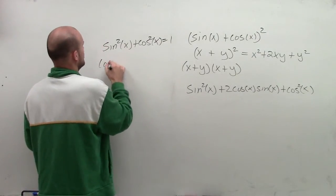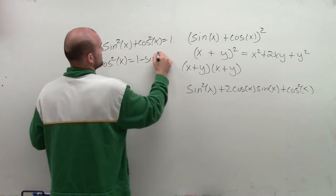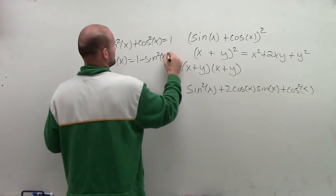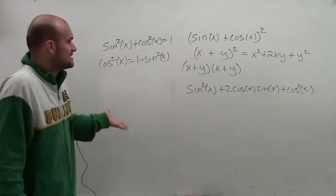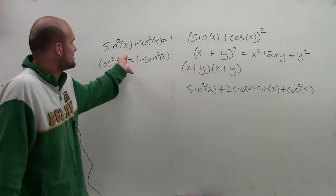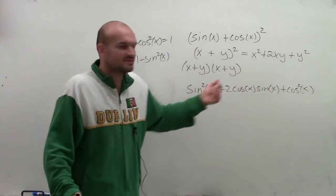Therefore, I could say cosine squared of x equals 1 minus sine squared of x. So what I can do is solve for cosine because I want to rewrite my cosine in terms of sine.